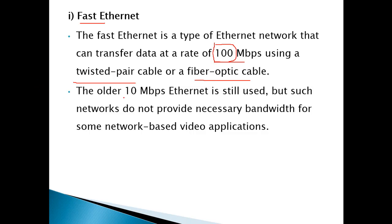The original Ethernet was 10 Mbps, which may still be used in some places. However, remember that its bandwidth is not sufficient for video applications — video data transmission requires heavy bandwidth, and 10 Mbps cannot support that.